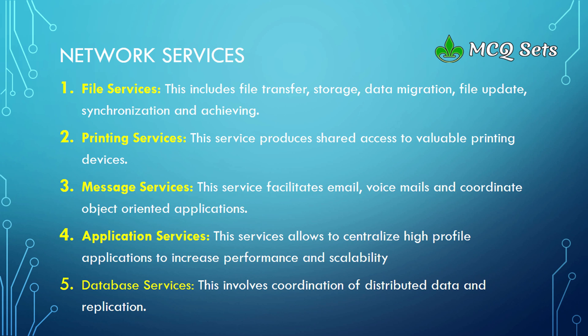The fourth service is application services — you purchase and install an application on a server, and then it can be used by all computers over the network. This allows centralized high-profile applications to increase performance and scalability. The fifth and final service is database services, which involves coordination of distributed data and replication. With a database server on your network, all computers can store and retrieve data from that database, enjoying all the services it offers.